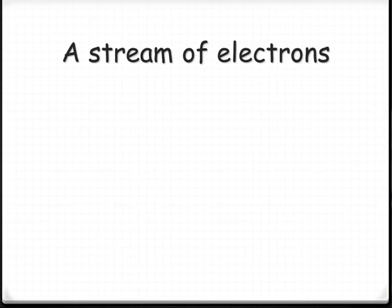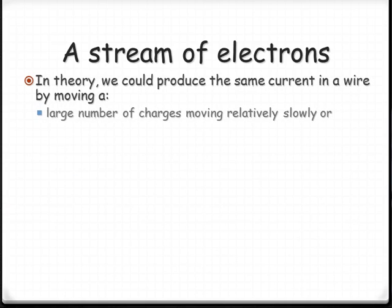For a given wire, you could produce the same current either by moving a large number of charges through slowly, because current is the amount of charge per unit time passing that point. So if you move lots of charge slowly, or you can move a small number of charges but you move them really quickly. The same amount of charge gets passed but you're moving small amounts quickly.